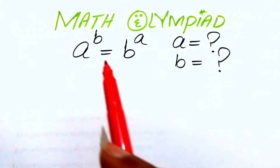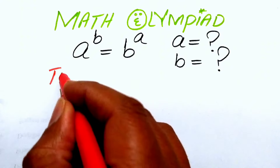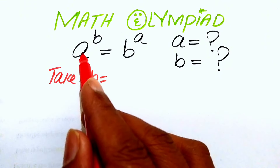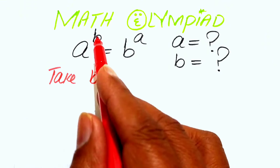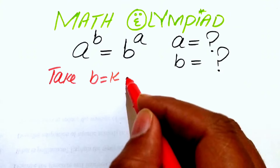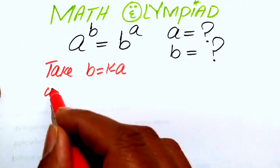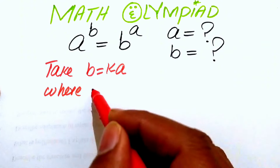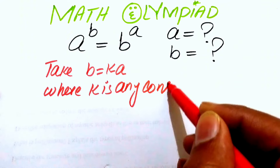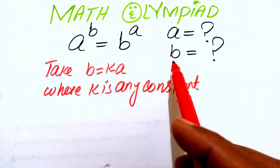The very first step we are going to do is assume that our exponent b equals some constant multiplied by a. So we suppose that b equals k times a, where k is any constant.